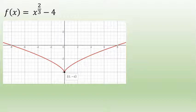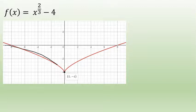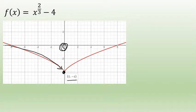This result can be verified by graphing the function using a graphing utility. The graph of x^(2/3) - 4 shows that the graph is in fact decreasing from negative infinity until x = 0, and at that x-value of zero there's a minimum value at (0, -4), and then it's increasing from zero to infinity.